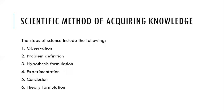These are the steps of science — the scientific method of acquiring knowledge — six steps in science. Number one: observation. Number two: problem definition. Number three: hypothesis formulation. Number four: experimentation. Number five: conclusion. Number six: theory formulation. These are the six stages that every discovery has ever gone through before those discoveries or theories were formulated and agreed to be correct.